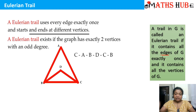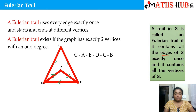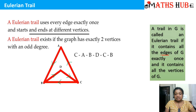Let's see this example. We have a graph with four vertices and we need to build an Eulerian trail. We go from C to A, then A to B, then B to D, then D to C, and then C to D. Since it's an open one, it is called a trail. So C, A, B, D, C, D is an Eulerian trail.